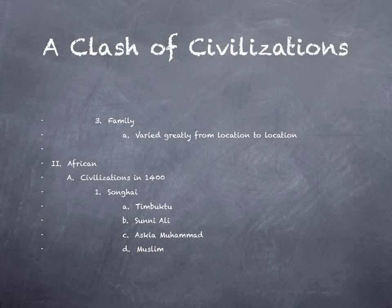The African civilizations at the time of the arrival of the Europeans included civilizations like the Songhai. Songhai had an advanced center of learning in a town called Timbuktu. Some of their more significant rulers include Sunni Ali and Askiya Muhammad. As their names might suggest, they were Muslim — in fact, a lot of the people of the Songhai were followers of Islam.